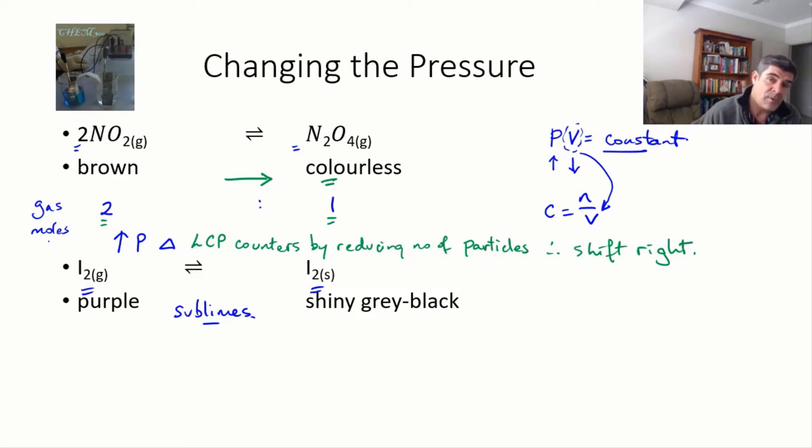It can actually set up an equilibrium between the solid and the gas. The gas is more of a purpley color. The solid is a shiny sort of grey-black color. What happens if we were to increase the pressure in this system?